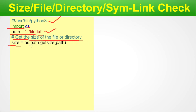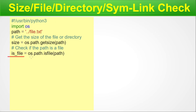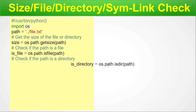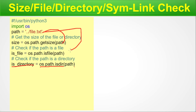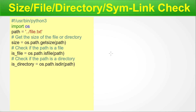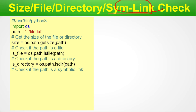We start with the interpreter, import os, and set the path to file.txt. To get the size of the file or directory, we use os.path.getsize(path). Next, to check if the path is a file, we use os.path.isfile(path). To check if it is a directory, we use os.path.isdir(path).